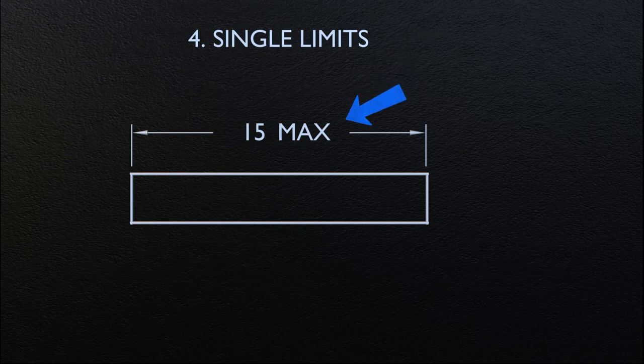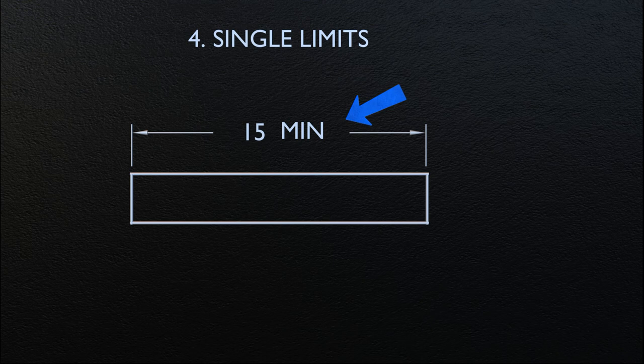Single limits — min or max — are placed after a dimension where other elements of the design definitely determine the other unspecified limit. Features such as depths of holes, lengths of threads, corner radii, and chamfers may be limited in this way. Single limits are used where the intent will be clear, and the unspecified limit can be zero or approach infinity without resulting in a condition detrimental to the design.